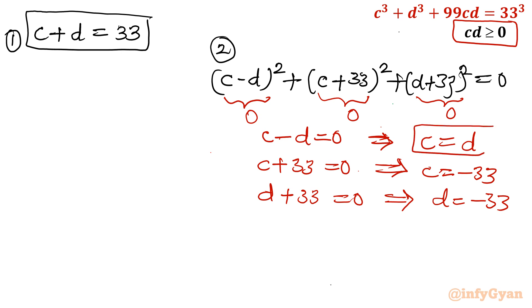You can see C equal to D. C and D both values are same. So I can write my one ordered pair is coming out from this equation. That is minus 33 comma minus 33.